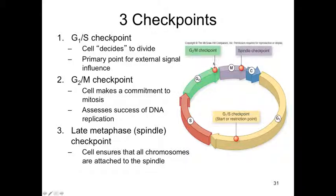There's also a G2/M checkpoint. This is where the cell makes a commitment to mitosis. At this checkpoint, the cell assesses the success of DNA replication. If there are errors, it won't be permitted to continue. And then the third checkpoint is the late metaphase or spindle checkpoint. This checkpoint ensures that all chromosomes are attached to the spindle and that we are ready to pull apart the metaphase plate.